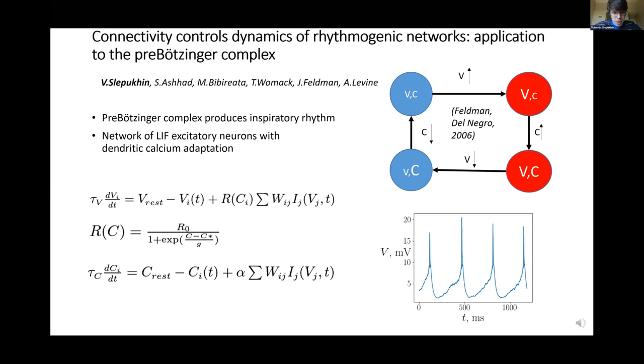The preBötzinger complex is a central pattern generator that produces inspiratory rhythm in mammals, and we would like to model it using a network of leaky-integrate-fire excitatory neurons with dendritic calcium adaptation. Dendritic calcium adaptation means that the sensitivity of the neurons to the incoming spikes decreases as the calcium concentration increases, and calcium concentration in turn increases when a neuron receives more spikes.